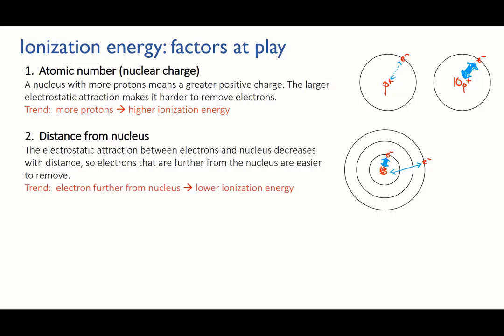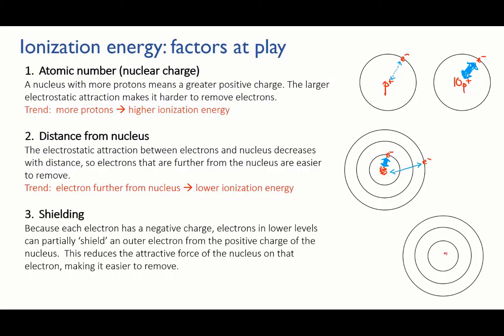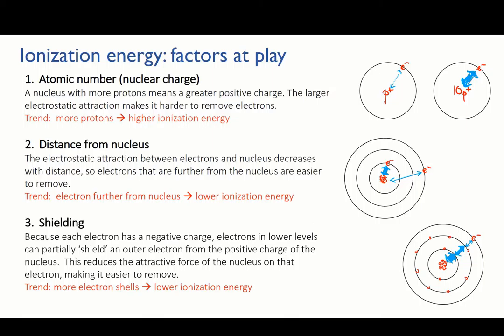Third is the shielding effect. As you now know, an electron in a higher energy level doesn't experience the full attraction of the nucleus, because there's a cloud of electrons in the lower energy levels between it and the nucleus. This shielding effect weakens the attractive force between the nucleus and the electron, so the higher the energy level the electron is in, the lower the ionization energy.